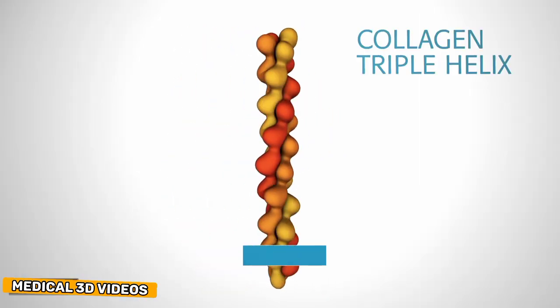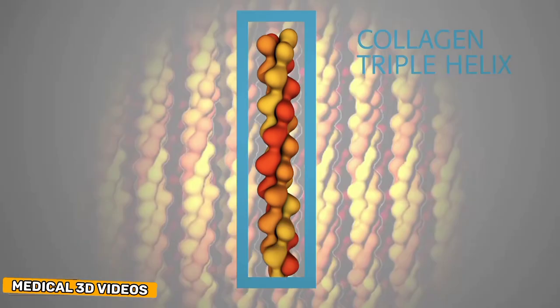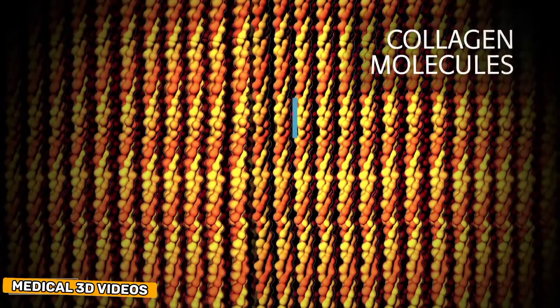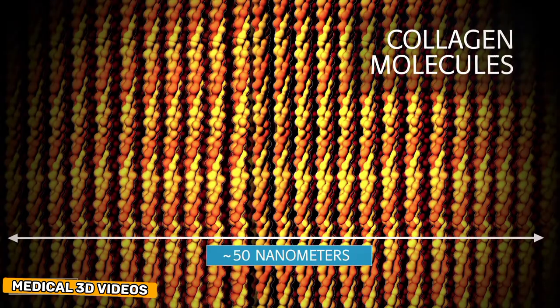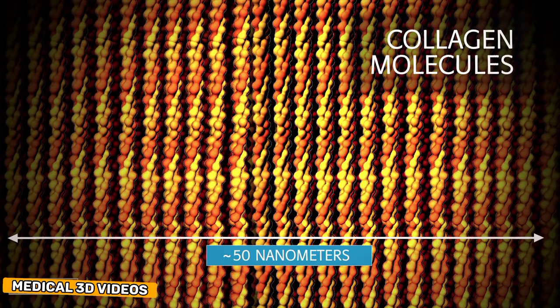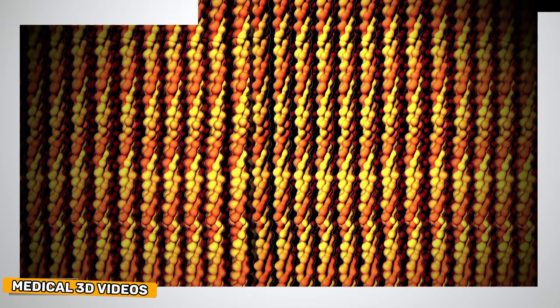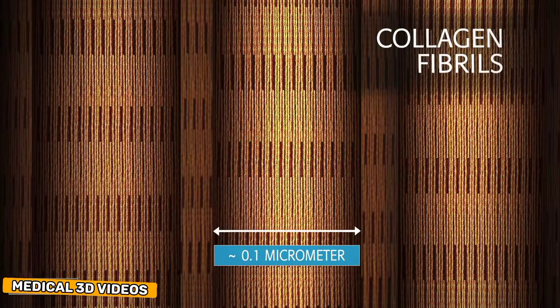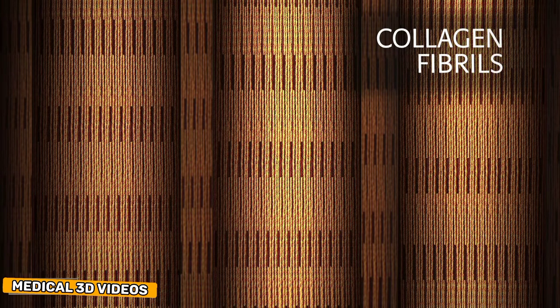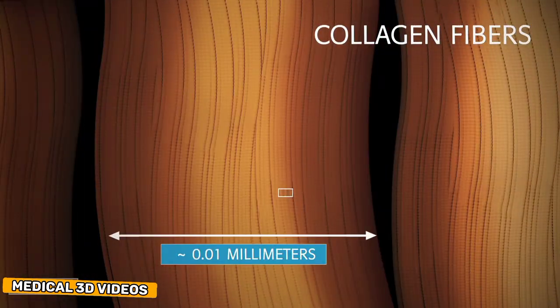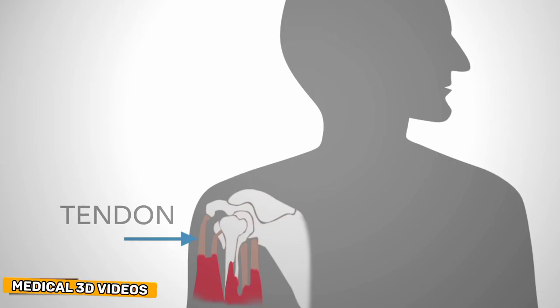Collagen forms a strong triple helix that is used throughout the body for structural support. Collagen molecules can form elongated fibrils, which aggregate to form collagen fibers. This type of collagen is abundant in skin and tendons.